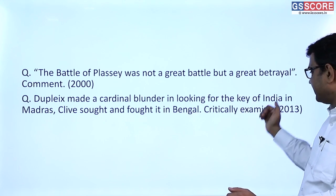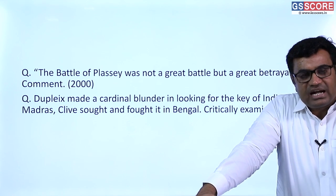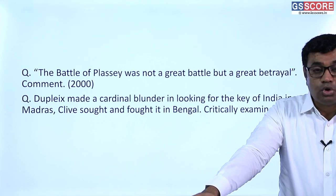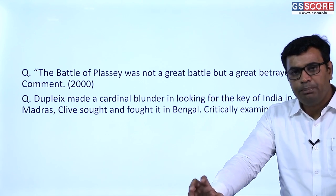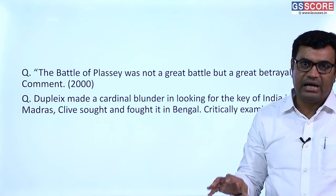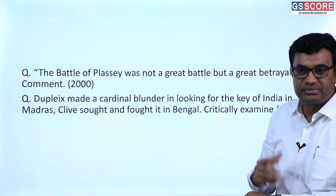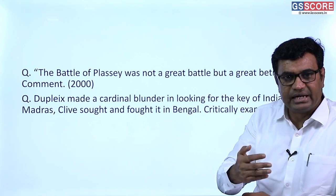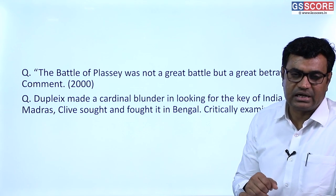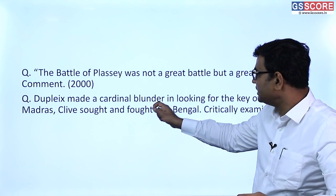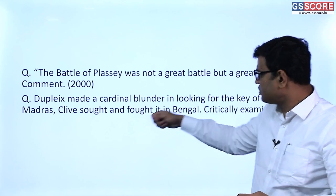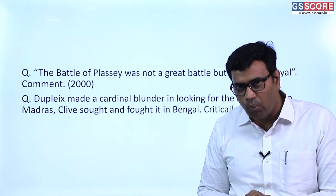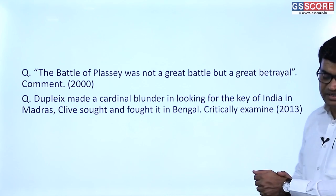As discussed, British and French fought three Carnatic Wars. French fortune was revived under Dupleix, governor of French East India Company, who focused on the regions around Pondicherry. But when British established control over Bengal under Robert Clive after the Battle of Plassey, the rich resources of Bengal in men and material enabled Clive to defeat French forces in the Carnatic Wars. That is why it is said Dupleix made a cardinal blunder looking for the key of India at Madras while Clive sought it in Bengal.